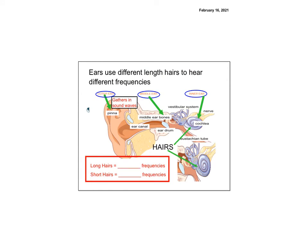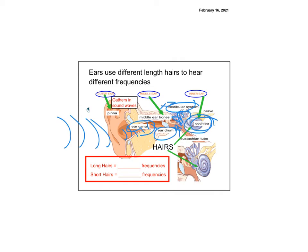Let's look at ears. A sound wave comes into the ear canal, hits the eardrum, and the eardrum vibrates. That makes the fluid in the vestibular system and semicircular canals move. Sound waves come in, hit the eardrum, bones vibrate, liquid vibrates, and inside the cochlea — the snail-shaped inner ear — are little hairs. Some hairs are longer and some are shorter.